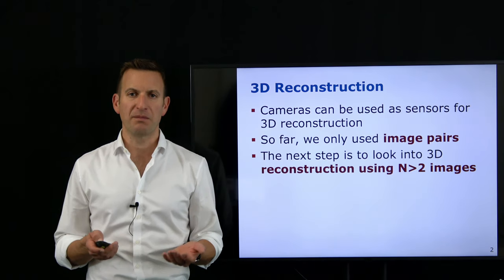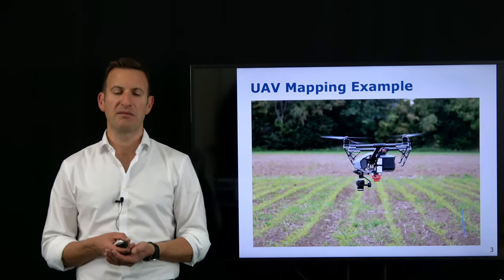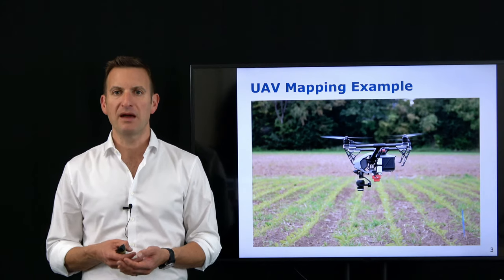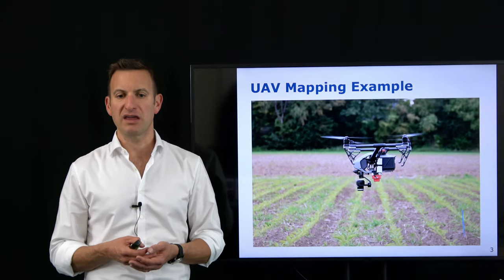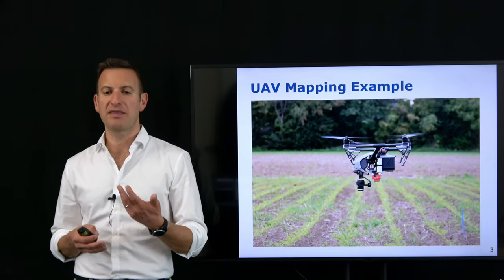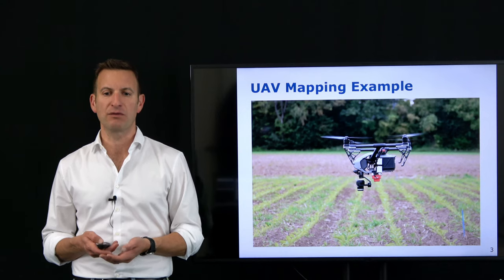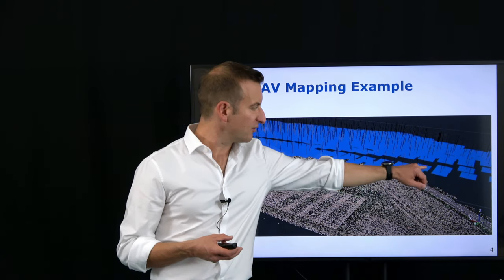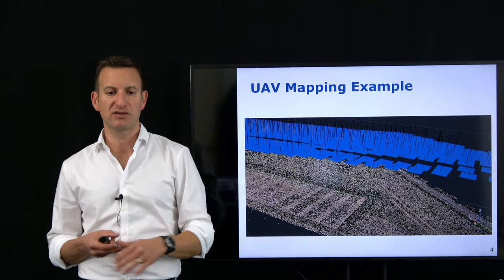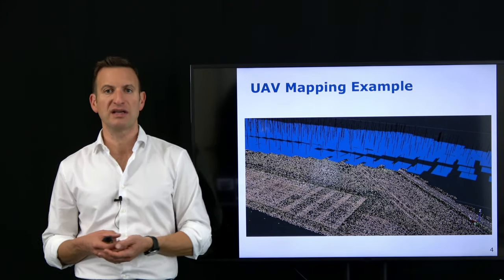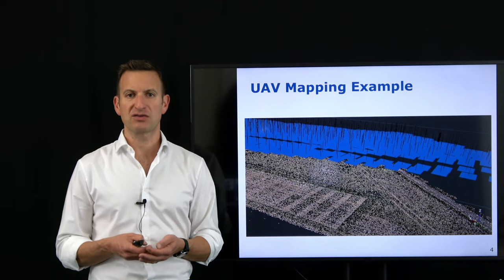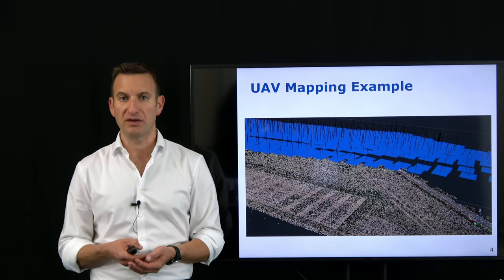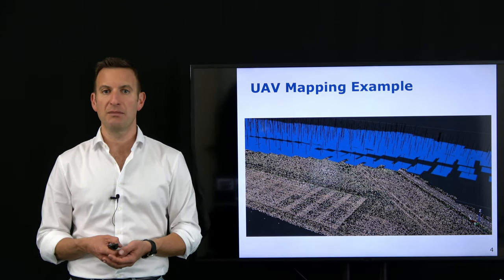This is still a very relevant task and something we use very often as standard tools for measuring tasks. For example, a UAV can fly through the environment, take camera images, and then build 3D models of the scene. You can see here the different camera locations shown as blue planes, and down here are triangulated feature points — for example SIFT features extracted from the camera images. This would be the output of a bundle adjustment system.